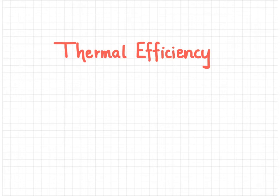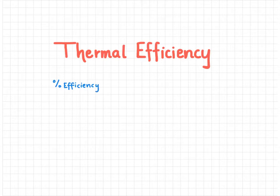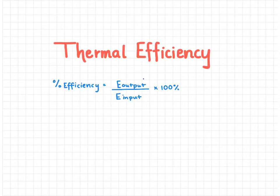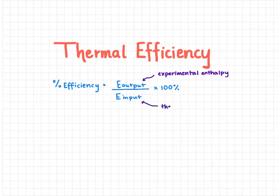In this video we're going to look at thermal efficiency for two reactions: one in which we're given the experimental enthalpy of reaction and one in which we're not. The formula for efficiency, expressed as a percentage, is: percent efficiency equals energy output divided by energy input times 100%. Because we're talking about enthalpy, our energy output is generally the experimental molar enthalpy and our energy input is the theoretical molar enthalpy.